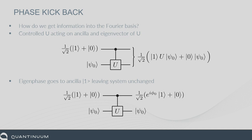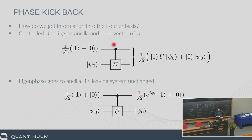What phase kickback is really about: when we have a controlled unitary acting on an eigenstate, the unitary is applied but because this is the eigenstate, the phase just gets generated and you can form the product — it's almost like the eigenstate wasn't touched. The phase gets kicked back onto the ancilla. This is how we get the input state of the quantum Fourier transform in the form we want — the game we play to get the right input state to read out the phase.